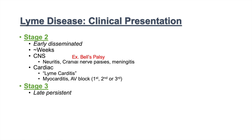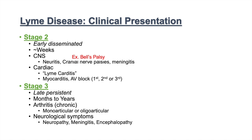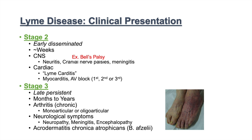In stage three, considered the late persistent stage, symptoms usually occur months to years after a tick bite. The patient experiences chronic arthritis, which could be monoarticular or oligoarticular. There are also neurological symptoms such as neuropathy, meningitis, and encephalopathy. With infections of Borrelia afzelii specifically, we see another characteristic skin rash known as acrodermatitis chronica atrophicans — a reddened skin rash in different parts of the body.